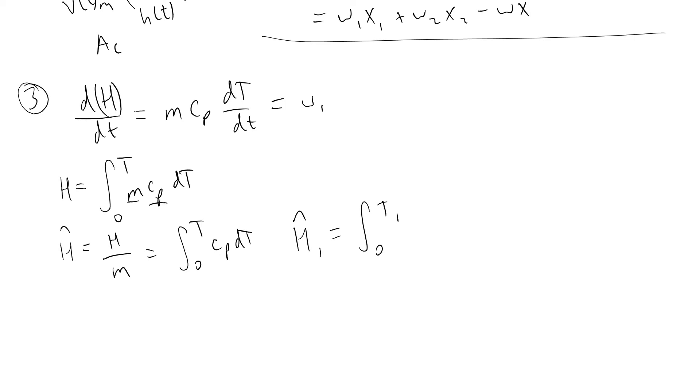We'll let the reference temperature be 0 for simplicity. We also have stream 2 coming in with its enthalpy contribution w2 cp (T2 - 0), then enthalpy leaving our system minus w cp (T - 0).